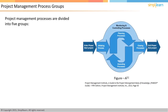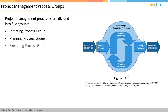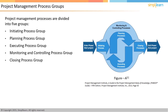The project management processes are divided into five process groups: the initiating process group, planning process group, executing process group, monitoring and controlling process group, and closing process group.